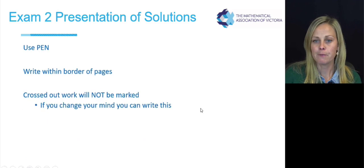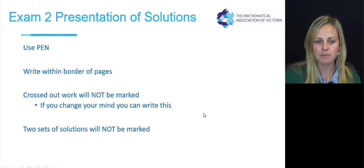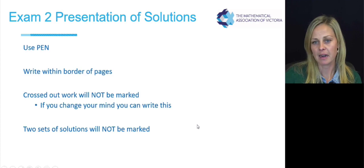So crossed out work will not be marked. If you change your mind and you want that working, then you have to write this. You have to say, please, if you can look at this working, I didn't mean to put a cross through it. That's fine, but you need to write that. And your two lots of answers won't be marked either. Therefore, if you've written X might be three or 3.5, even if one of those is correct, I can't mark either of them. It has to be one answer only.